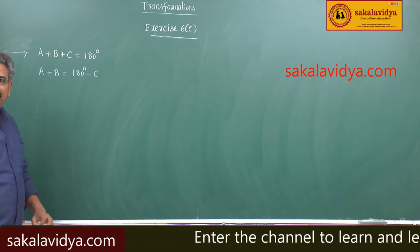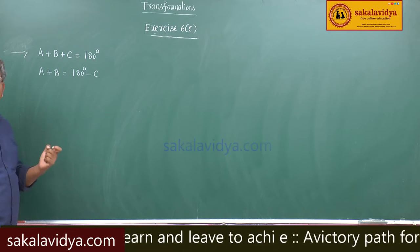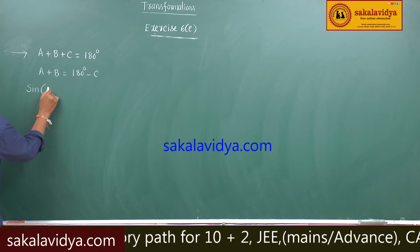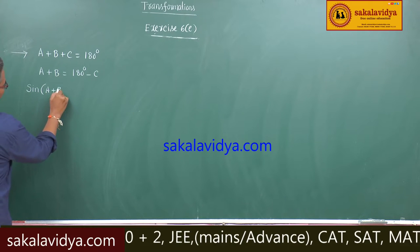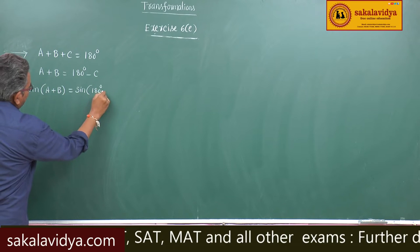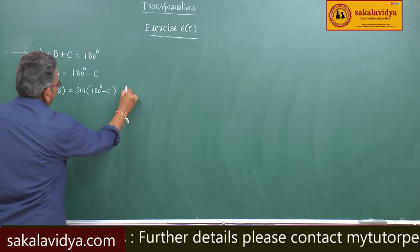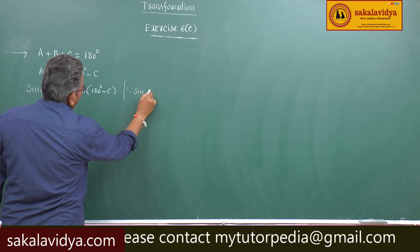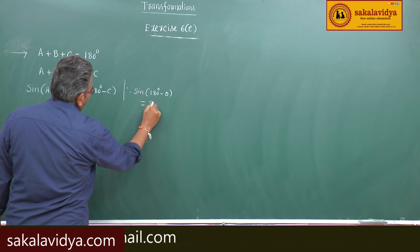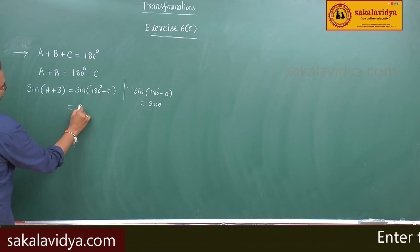If you apply the sin function on both sides, sin of (a+b) is equal to sin of (180 degrees minus c). We know that sin(180 minus theta) equals sin(theta), so sin(a+b) becomes sin(c).